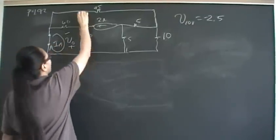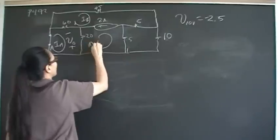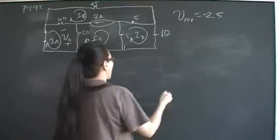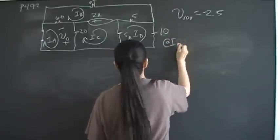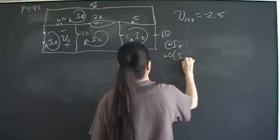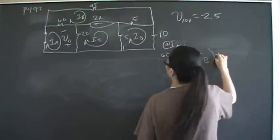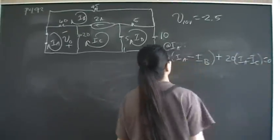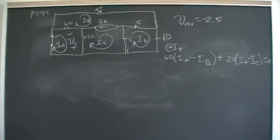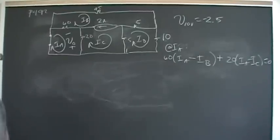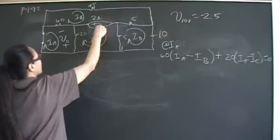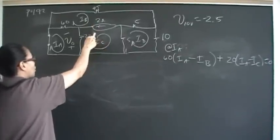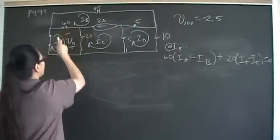I labeled the mesh currents Ia, Ib, Ic, and Id, and began constructing my mesh equations. The mesh equation at Ia is: 60(Ia − Ib) + 20(Ia − Ic) = 0. Now I recognize that Ib and Ic share a border that is an independent current source — that makes a super mesh. When two essential meshes share an independent current source as their border, you ignore that branch and treat them as one big mesh.